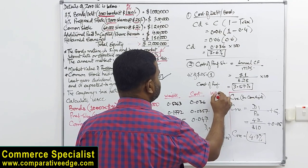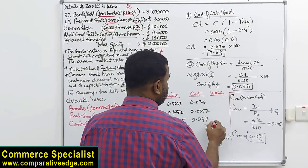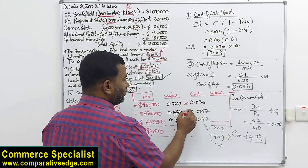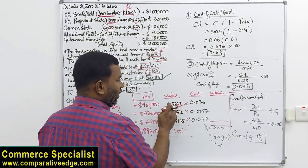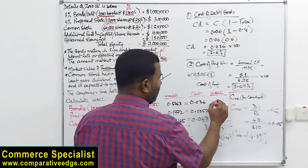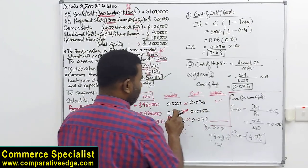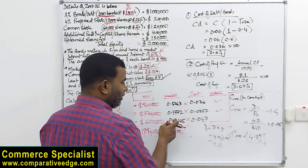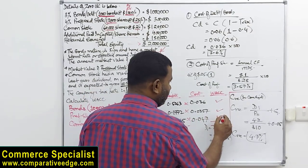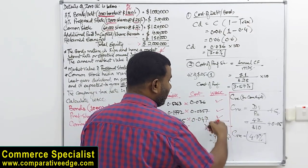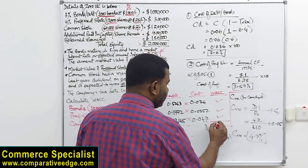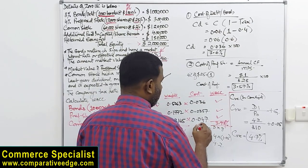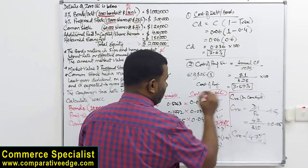Now for the final WACC calculation: multiply each weight by its respective cost — 0.5063 × 0.036, plus 0.1772 × 0.0357, plus 0.3165 × 0.047 — add them all up and multiply by 100. The result is 3.93%, which is your weighted average cost of capital.